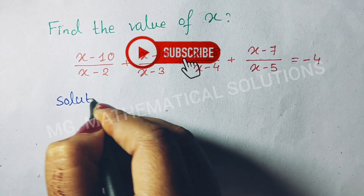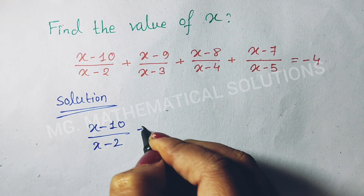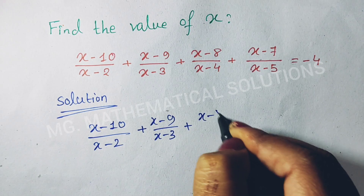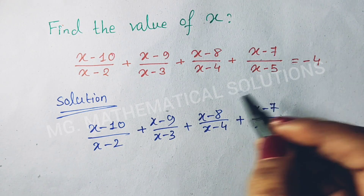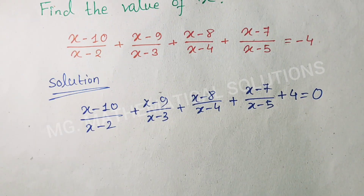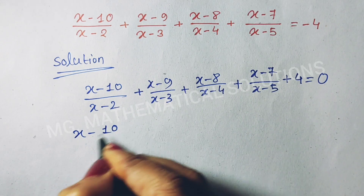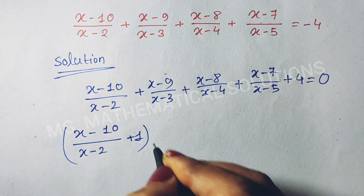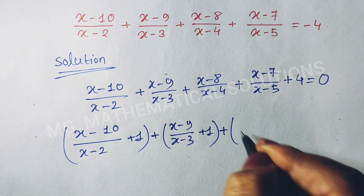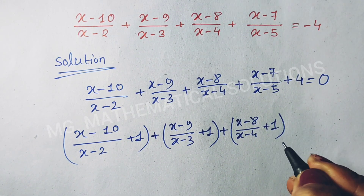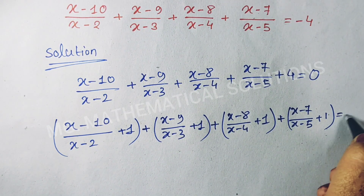Let's see the solution. We write the left side: (x-10)/(x-2) plus (x-9)/(x-3) plus (x-8)/(x-4) plus (x-7)/(x-5) plus 4 equal to 0. We can write 4 as 1 plus 1 plus 1 plus 1, so each fraction gets plus 1 added to it, equal to 0.